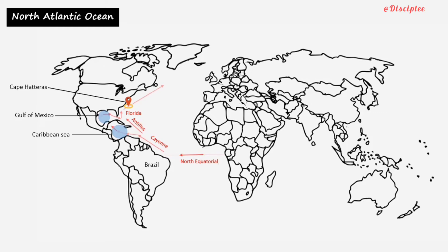The Gulf Stream then reaches Europe as the North Atlantic Drift. The North Atlantic Drift, also known as NAD, flowing at 10 miles per day, carries the warm equatorial water for over 1,000 miles to the coast of Europe.